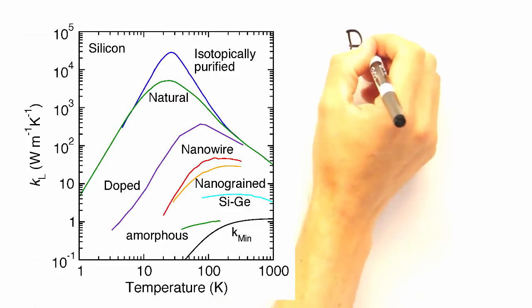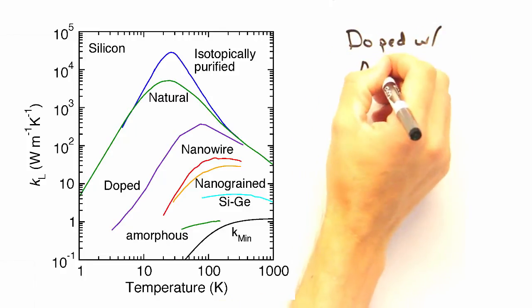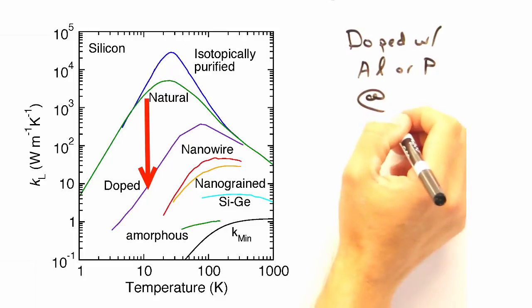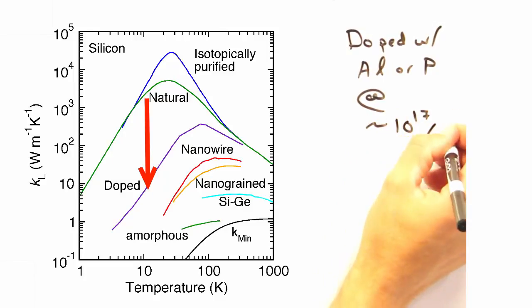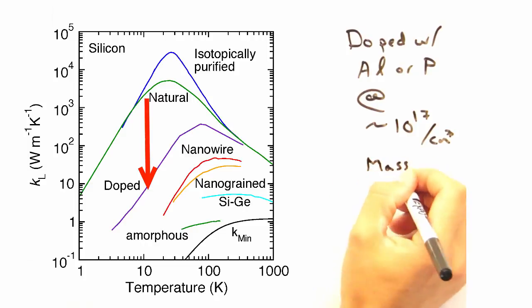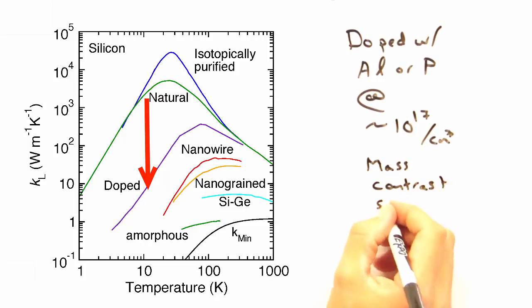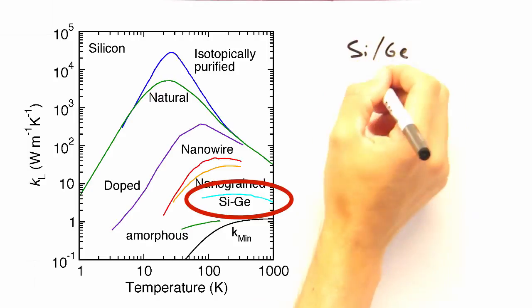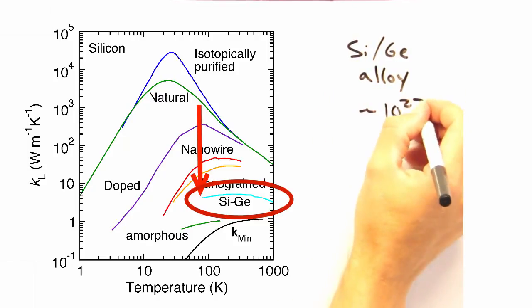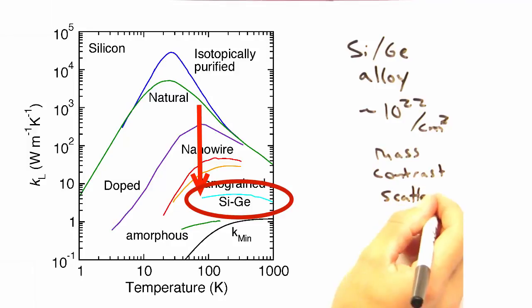Now instead of having isotopic impurities, as we have in natural silicon, let's say we take silicon and dope it with aluminum or phosphorus. What then happens to our thermal conductivity? It should drop. Because impurities are impurities, no matter what they are, and more scattering sources would decrease our net L, and thus kappa. Good. And we can say the same for the silicon-germanium alloy, except in this case the doping is about five orders of magnitude higher.